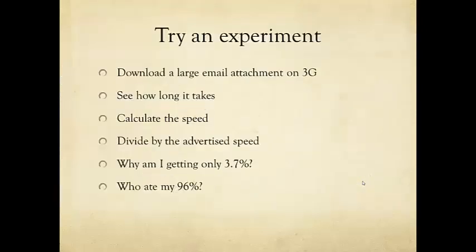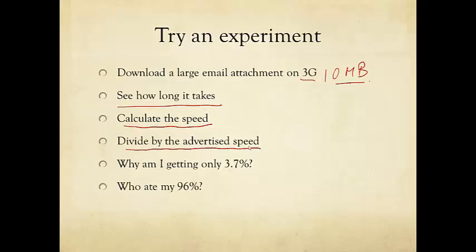Here's an experiment that you can try right now. Suppose you have 3G or 4G access and try to download a large email attachment, a PowerPoint of say 10 megabytes. Try it on your 3G data network, stopwatch and clock it to see how long it takes. Then divide 10 mega times 8, the number of bits, by the number of seconds it took. You calculate the speed of downloading this PowerPoint. Then divide that number by the advertised 3G speed.